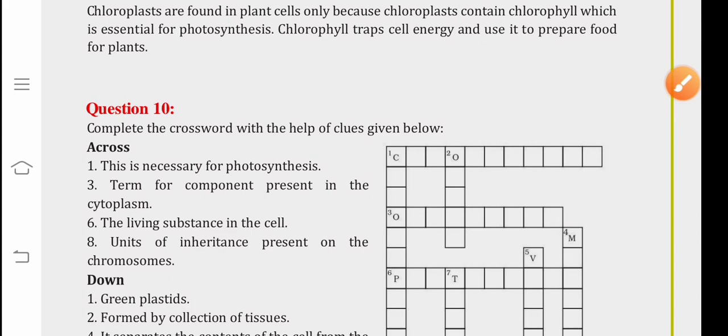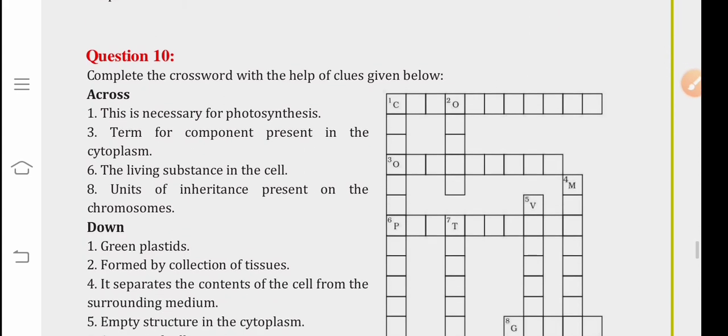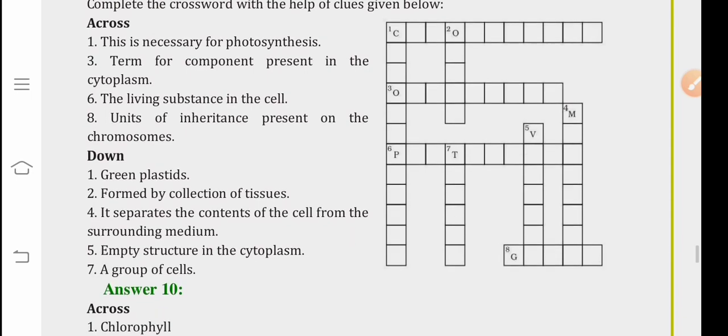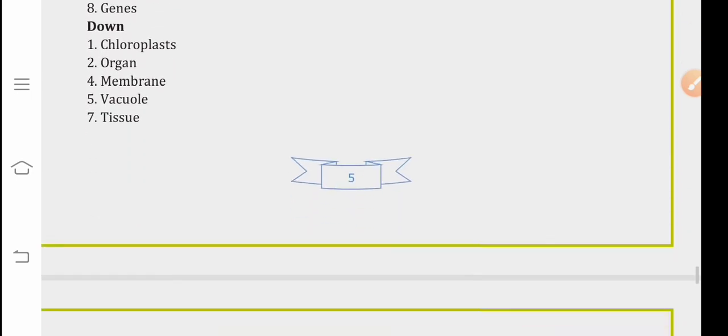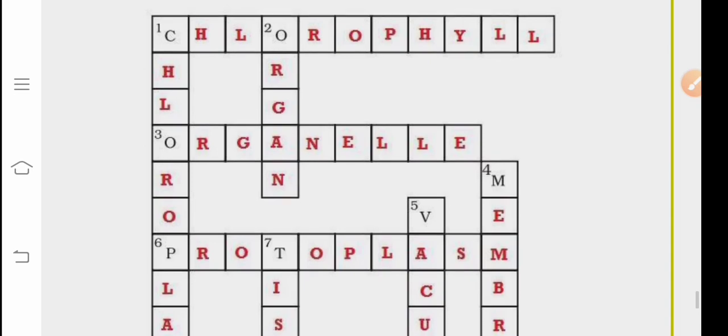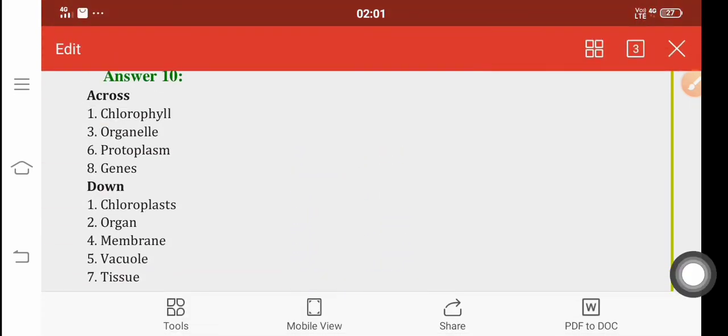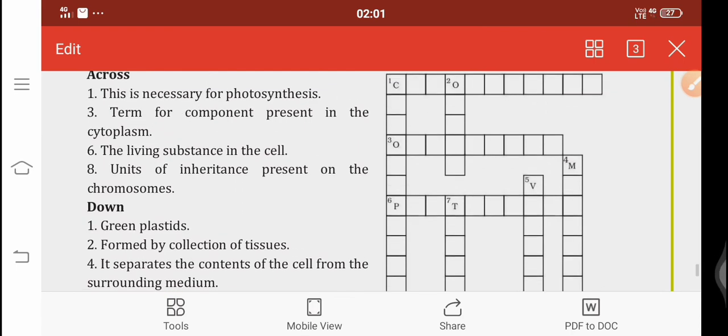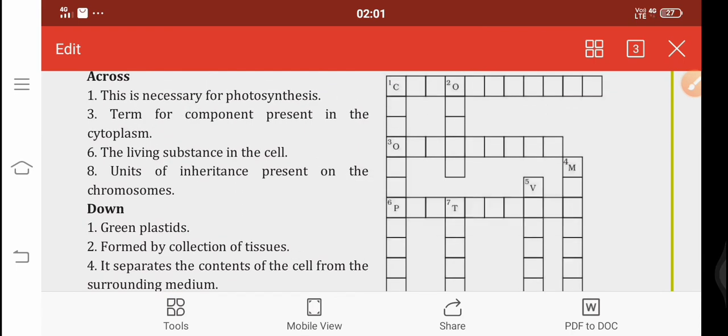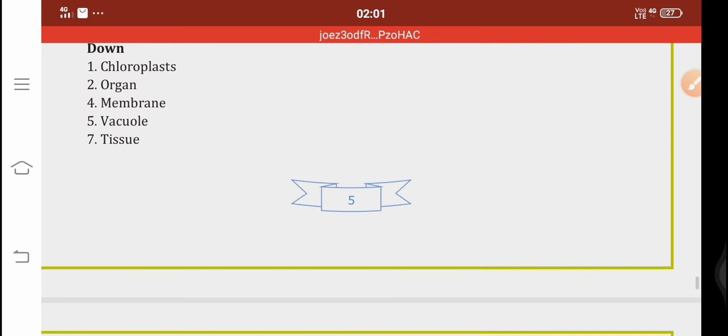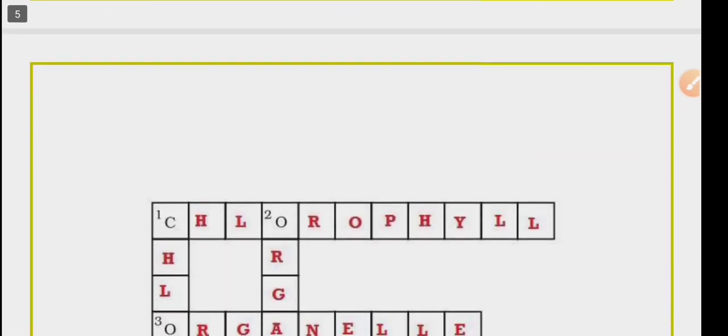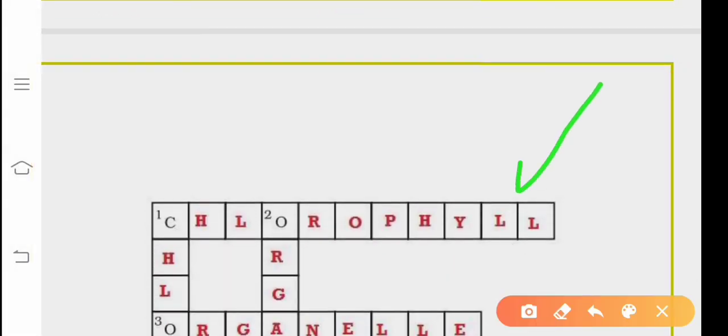Question number ten, complete the crossword puzzle with the help of clues given below. We come to the solutions here. The first clue is across. This is necessary for photosynthesis. What is necessary for photosynthesis? It is chlorophyll.